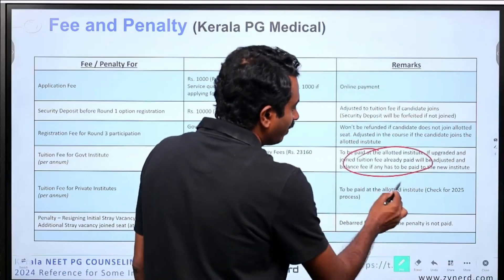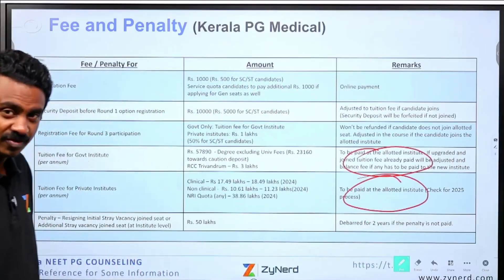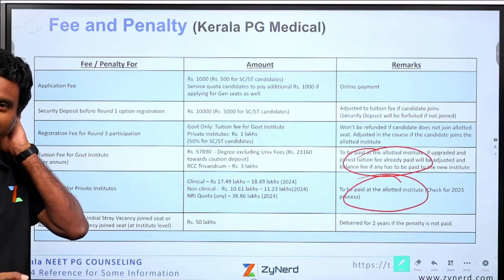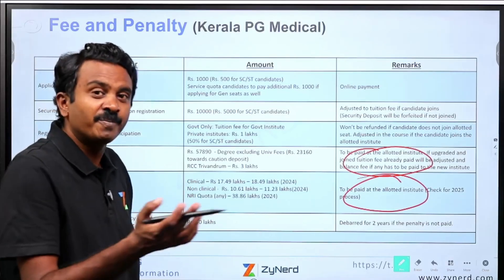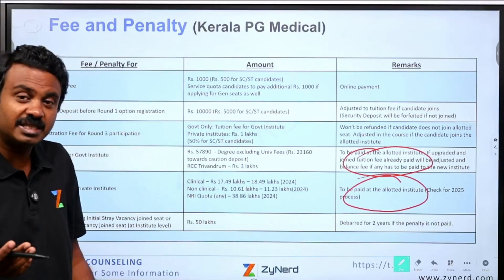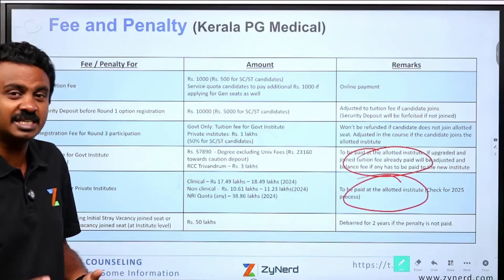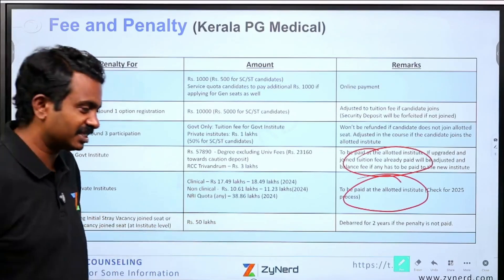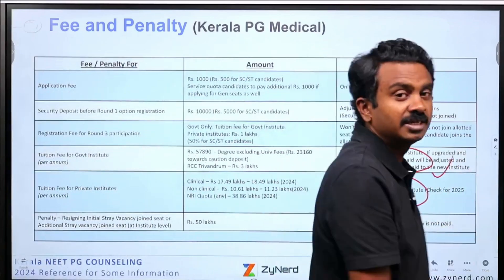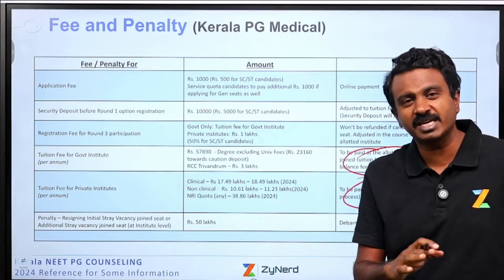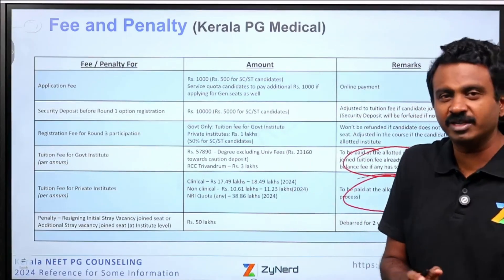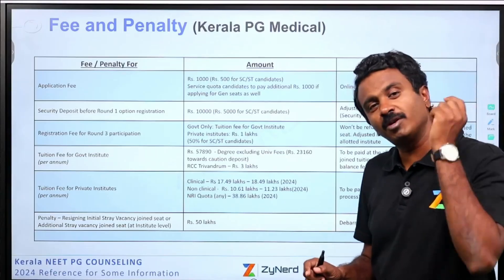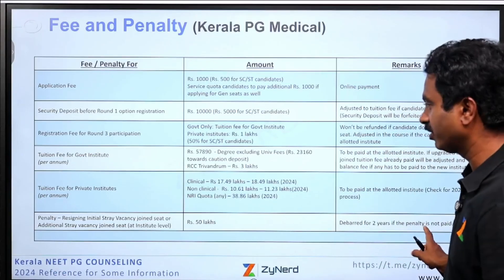All these fees need to be paid at the allotted institute. Once you get your allotment memo, you need to take all your certificates and make the fee payment at the allotted institute, where they will give you a receipt. If you then move to another institute, the fee amount will be adjusted — if the fee is higher at the second institute, you pay only the balance. If the fee is lower, the amount will be credited back to you at a later point in time.